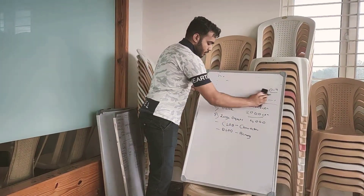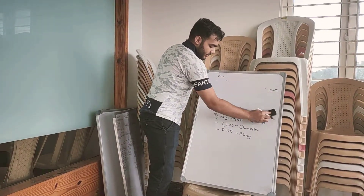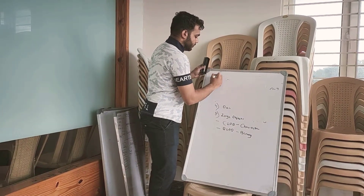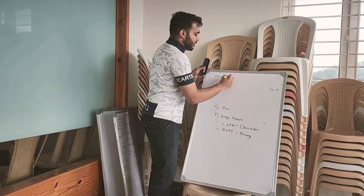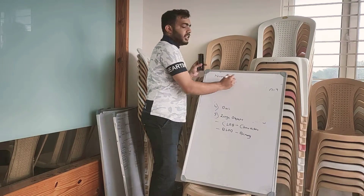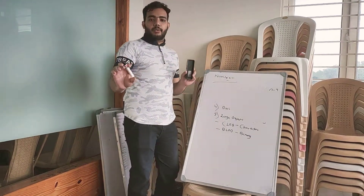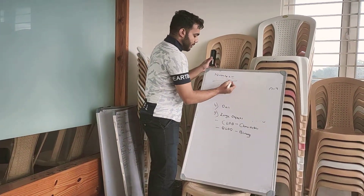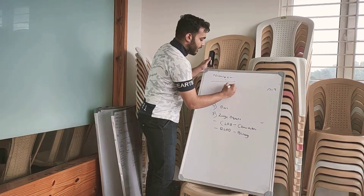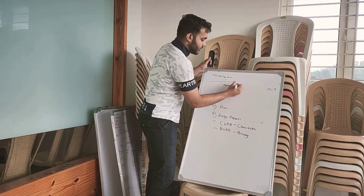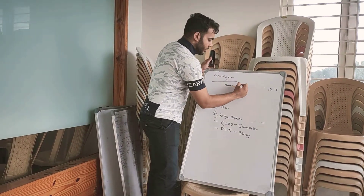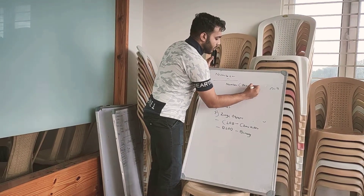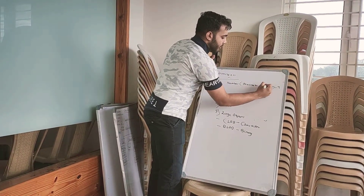Now let's see what numbers are. In numbers, we can store only numeric values. There are two arguments for numbers: precision and scale.